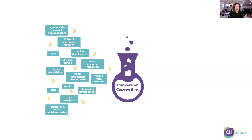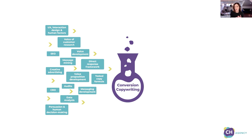On the left side, you've got UX, interaction design, and human factors. When I'm walking you through these components, this isn't exhaustive — this is just what you need to know to be a strong conversion copywriter. If you're looking at the left side of this conversion copywriting diagram and you're asking yourself, do I know anything about interaction design? When I say human factors, do you know what that means? Go Google it — Google is your friend. Go check that stuff out.